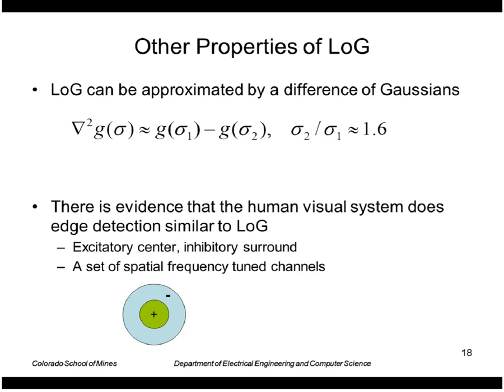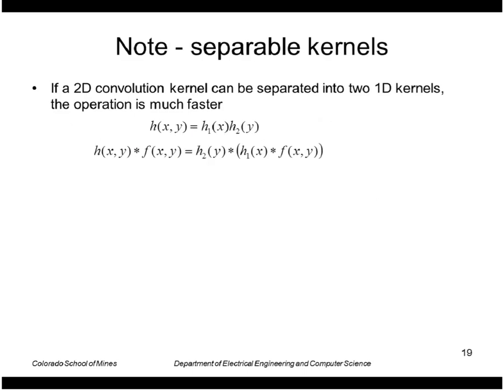There's also evidence that the human visual system does edge detection similar to this. There's evidence for cells in the visual cortex that are sensitive to light in an innermost portion like this and are inhibited by light outside that visual angle. And there's also cells of different sizes from small to large with these larger and smaller fields like that. So very much similar to Laplacian of a Gaussian in the scale space.